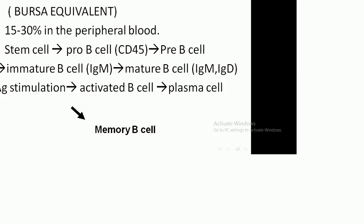The second cell type is the B lymphocyte, derived from bone marrow, or called the bursa equivalent in birds. B cells constitute 15 to 30% of lymphocytes and arise from stem cells through progenitor B cells, precursor B cells, and immature B cells to mature B cells.